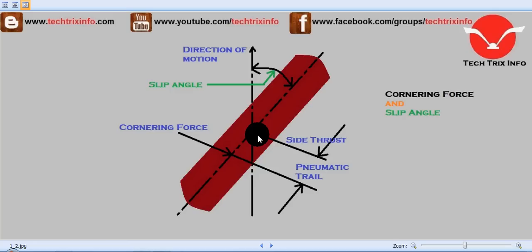To balance this, a cornering force acts opposite to the side thrust. So this is the side thrust acting and opposite we have a cornering force acting.